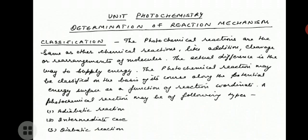Quantum yield (φ) for a product P formed from a photo reaction of an initially excited molecule can be expressed as: φ equals the number of molecules of product formed divided by the number of quanta of light absorbed. Product quantum yield is easy to measure. The number of quanta absorbed can be determined by an instrument called an actinometer, and we have studied quantum yield and actinometry in detail in our earlier lectures.